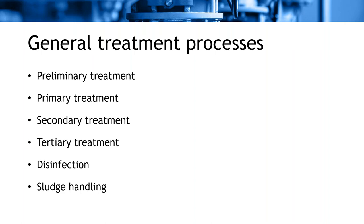Here are the general treatment processes: preliminary treatment is designed to remove debris; primary treatment removes organic matter; biological treatment reduces nutrient loading; secondary treatment further removes organics created during biological treatment; tertiary treatment is a polishing stage that includes disinfection and may incorporate specialized contamination removal such as precipitation of mercury or phosphorus or filtering; and finally, sludge handling removes solids created by all other processes and enables safe disposal.